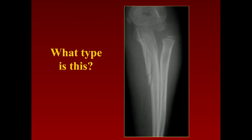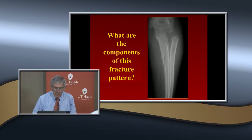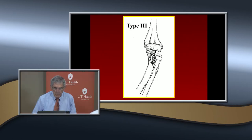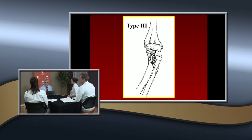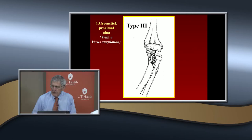Now we get to type 3. What are the components? In the ulna, you see radial bowing — it's a green stick fracture with a varus angulation, or radial bowing. It's usually in the olecranon, really in the proximal area, and usually green stick.